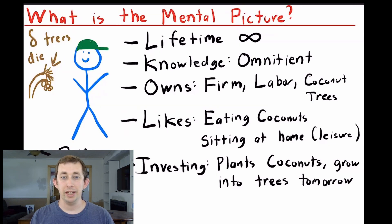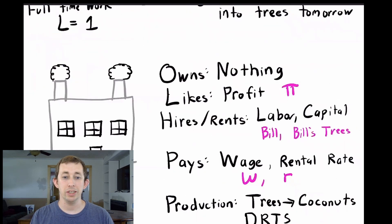Every period, Bill can invest in new coconut trees by planting coconuts, and he can also replace the delta amount of coconut trees that die every period through depreciation, and Bill only has a full day to either work or sit on the couch.